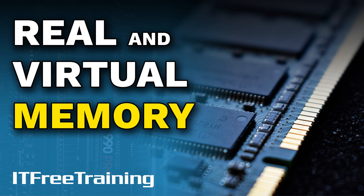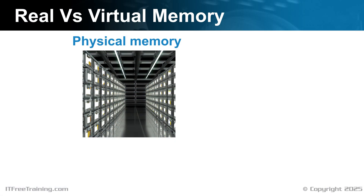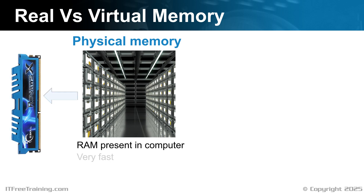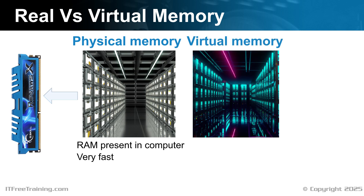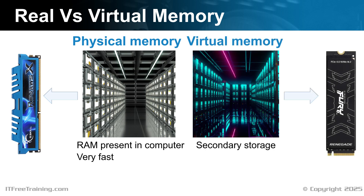Let's have a look at real and virtual memory. Real memory in your computer is the physical RAM present. This memory is very fast. In some cases, you may not have enough physical memory. When this occurs, the computer needs to supplement the physical memory, allowing it to use more memory than what is physically installed. This extra memory is called virtual memory. Virtual memory uses secondary storage to supplement physical memory, meaning the computer has access to more memory. The downside is that it is slower than physical memory.